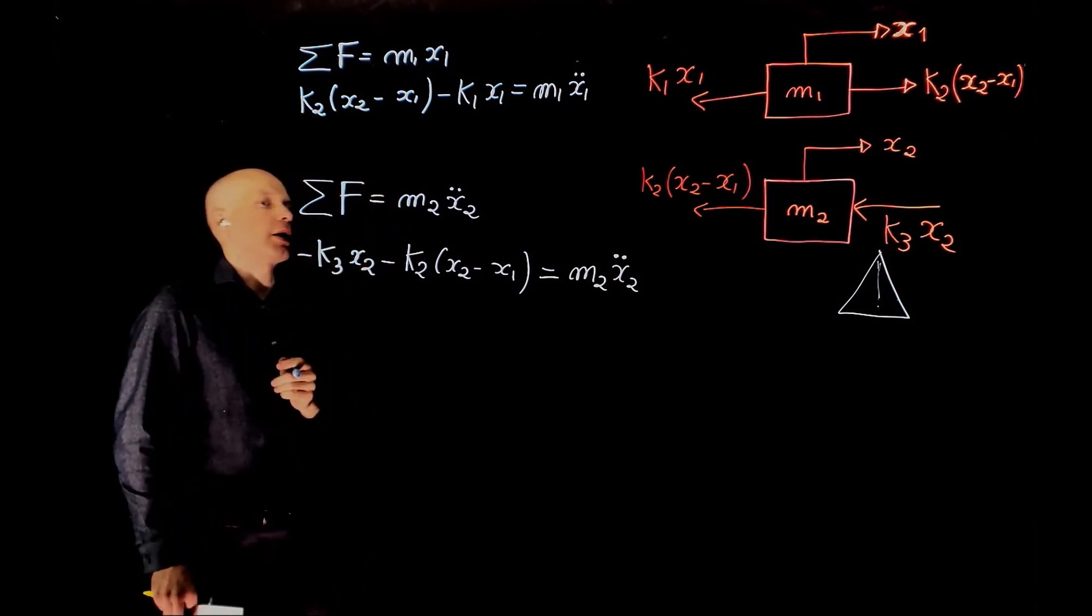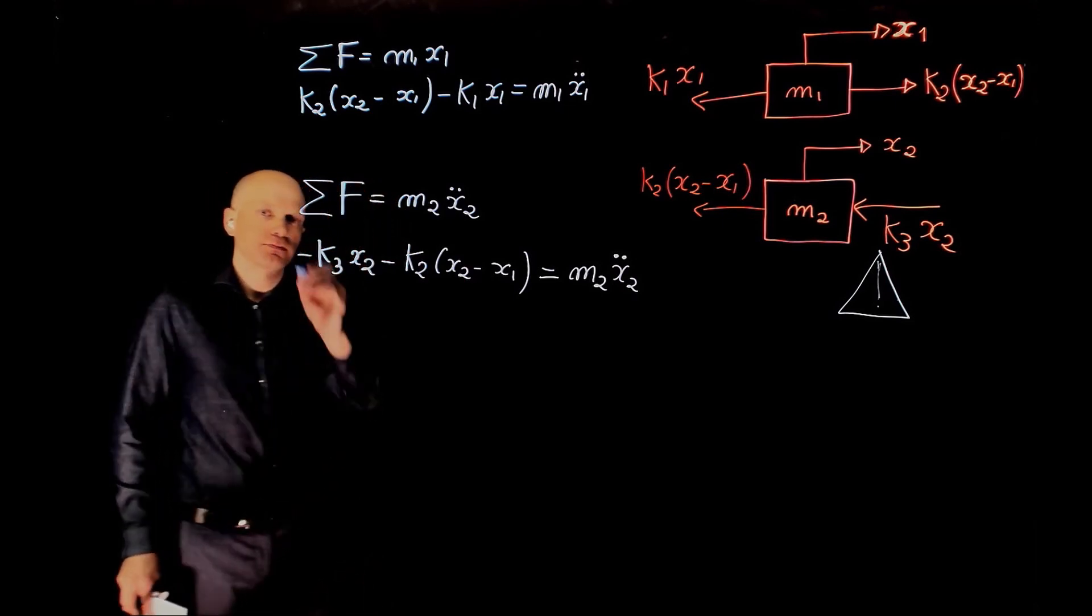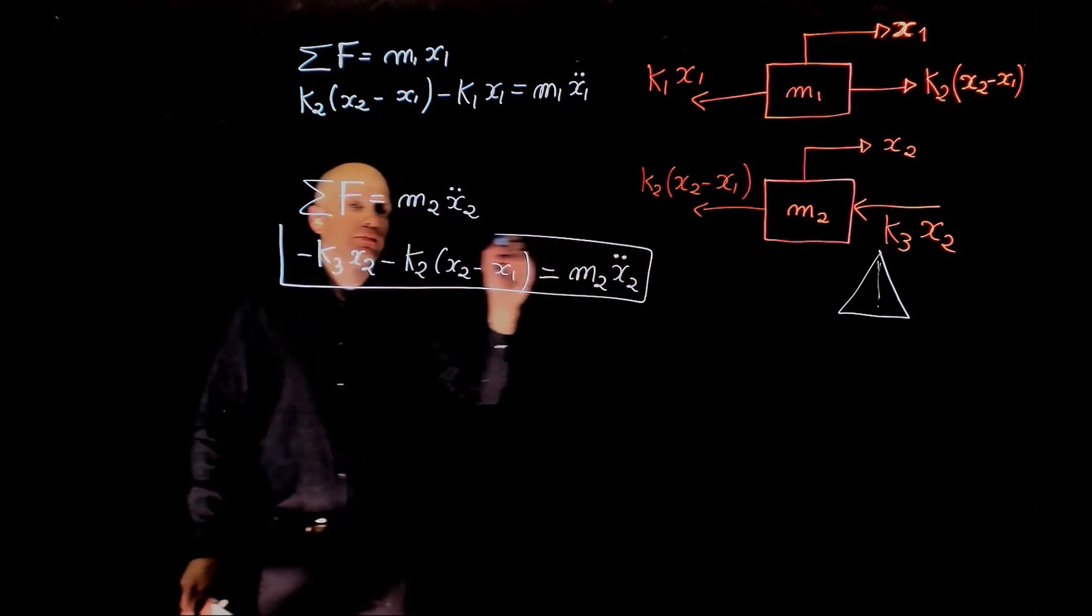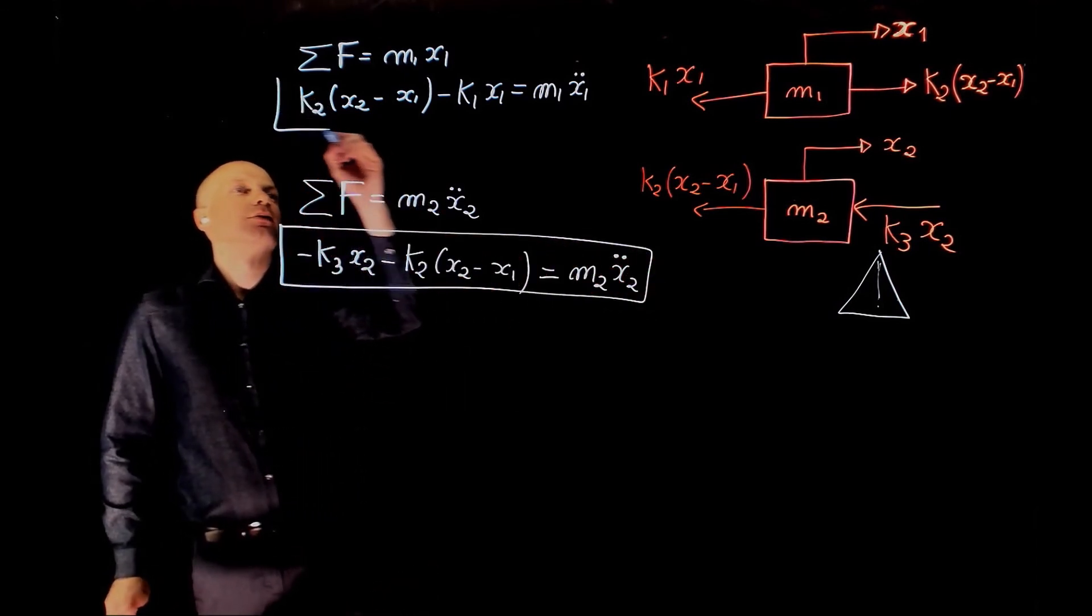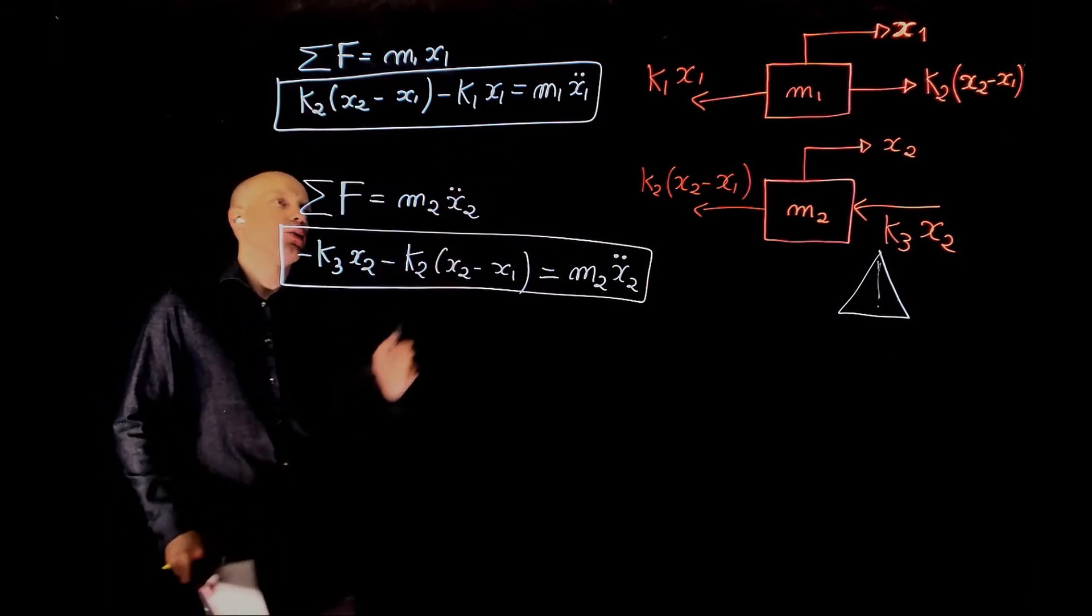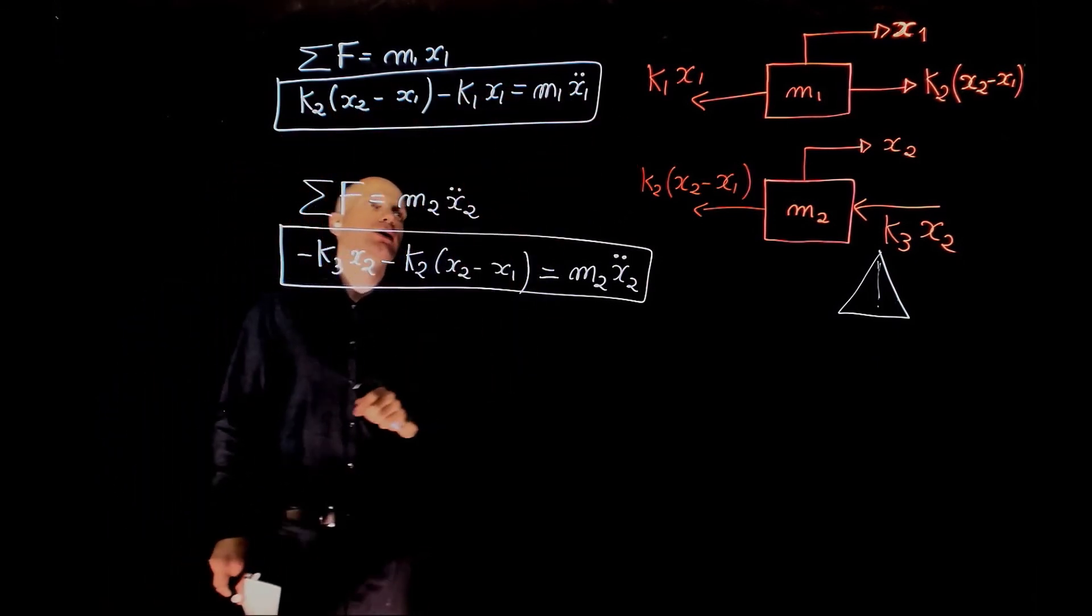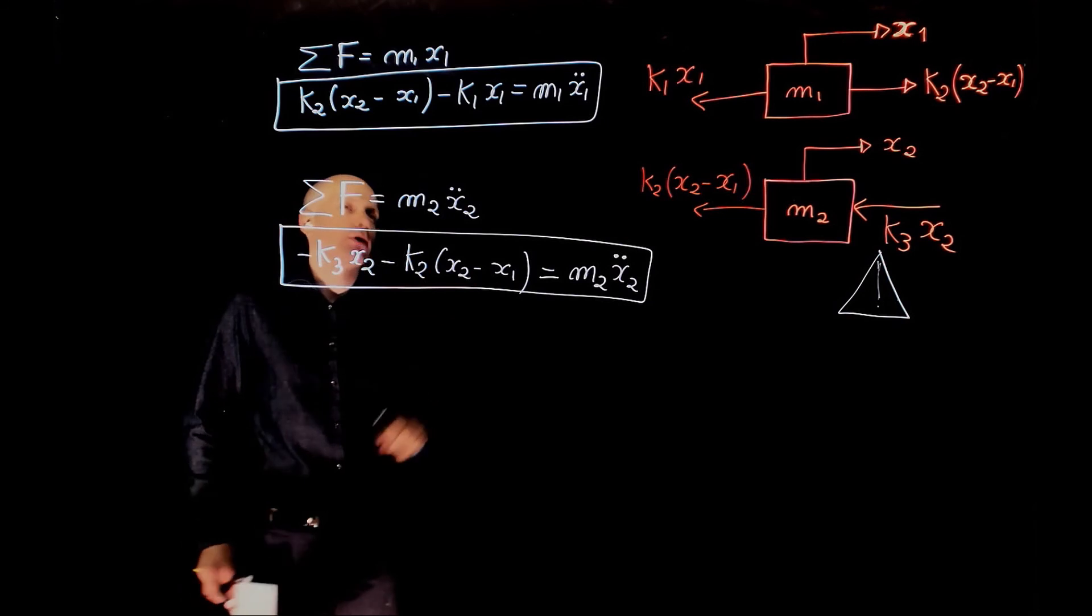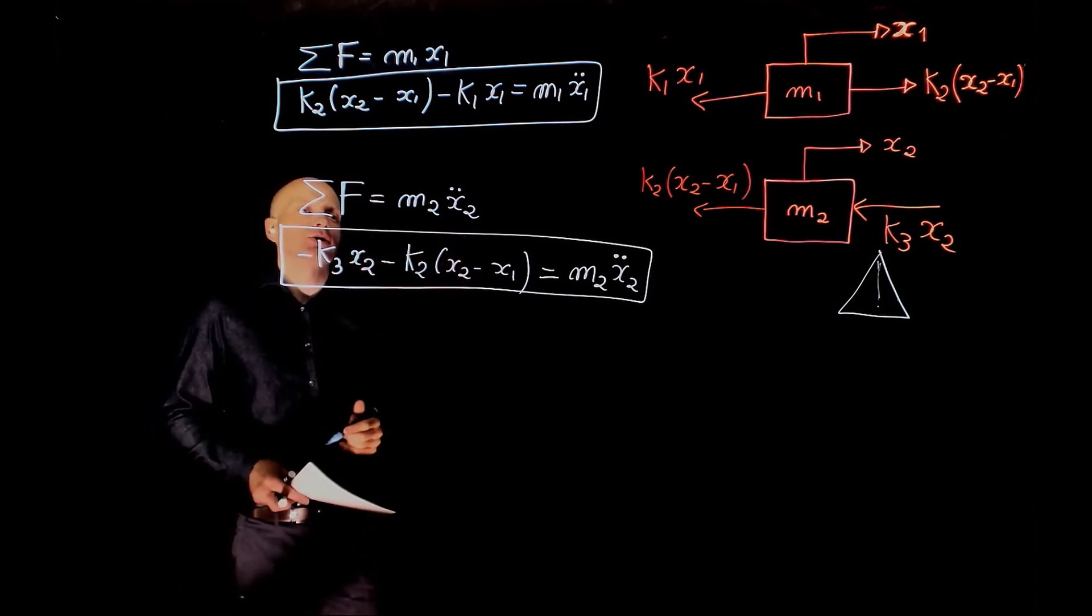And that's the equation for mass 2. And here we have mass 1. Again, you can rearrange these equations by moving everything to the right here and equating that to zero and same here. But the fundamental equation does not change.